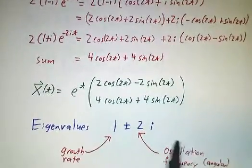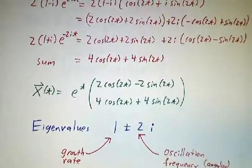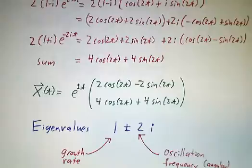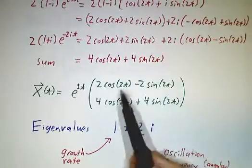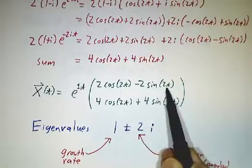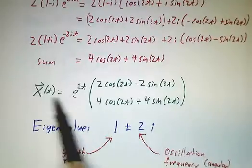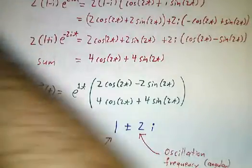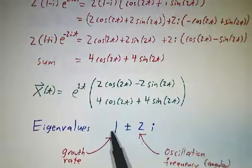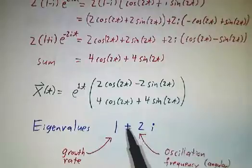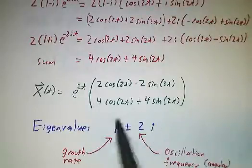Our eigenvalues were 1 plus or minus 2i, and with those eigenvalues, the 1 told us the growth rate. It's e to the 1t, and the imaginary part told us how fast we were rotating, how fast we were oscillating. It's 2i, so you have cos and sin. And finally, the answer is real. Well, it had to be real, because at the very beginning, we started off with a real differential equation, dx/dt equals Ax. A was a real matrix, x was a real vector, so x has to be a real vector. We use complex numbers to compute the answer, but the answer itself is gonna wind up being real.